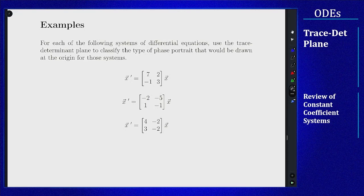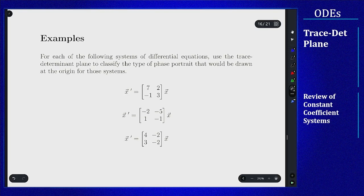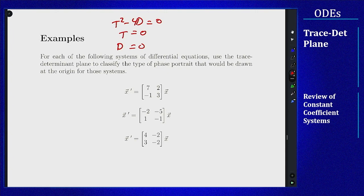Here I want to work on a few examples of using the trace-determinant plane to classify what's going to happen to the phase portrait without actually drawing or finding the general solution at all. The main things we need are the trace and the determinant. The key factors I'm looking for are what happens to t squared minus 4d, what happens to t, and what happens to d in regards to zero — whether these things are positive or negative — and use those facts to indicate what's happening to the system.